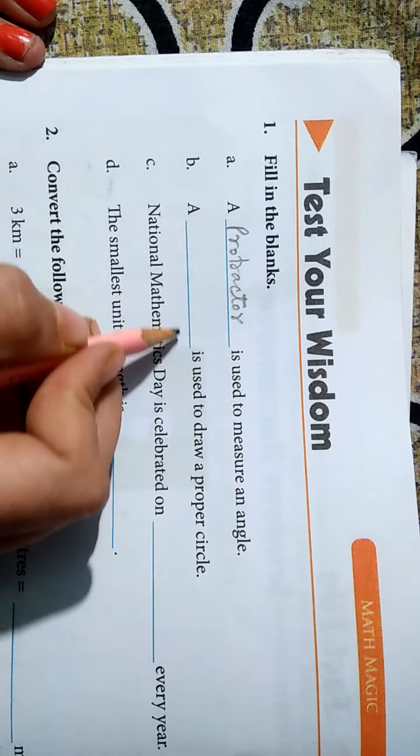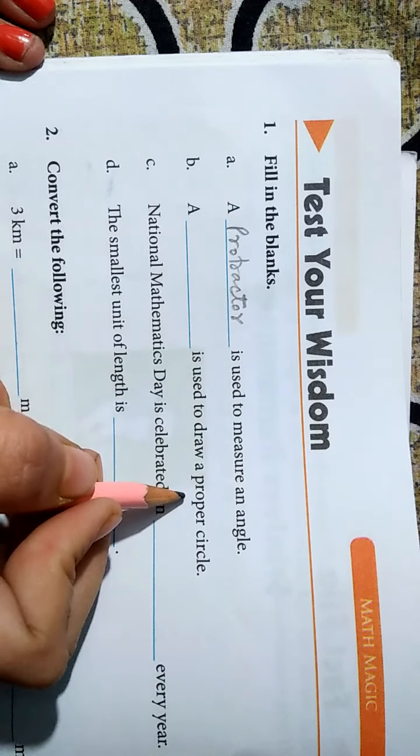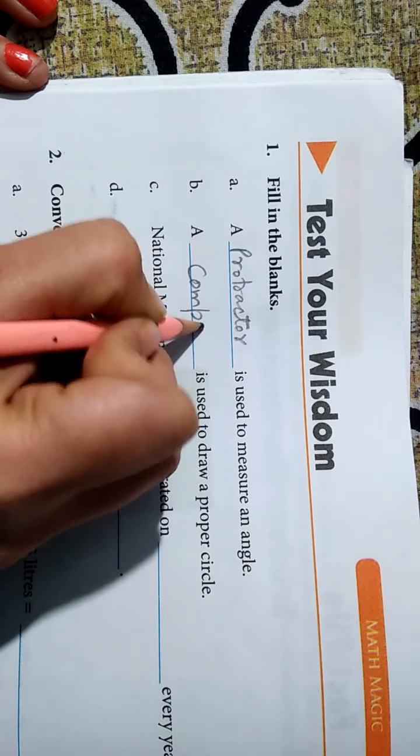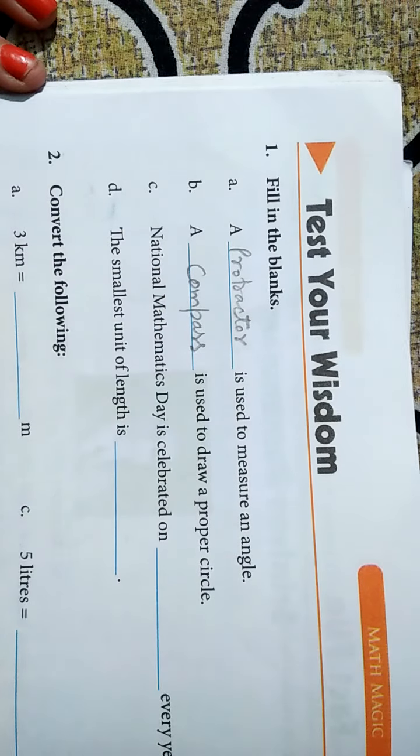A dash is used to draw a proper circle. Proper circle draw karne ke liye hum kis ka use karte hain? Compass. Humne pichli video mein bhi kiya tha ye. Compass hum use karte hain.